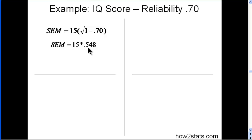15 times 0.548 which equals 8.22. So with a reliability estimate of 0.70 in IQ scores based on what the test provides in terms of reliability, we get a standard error of measurement of 8.22.